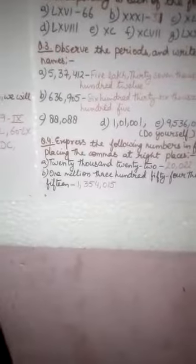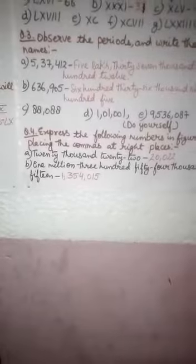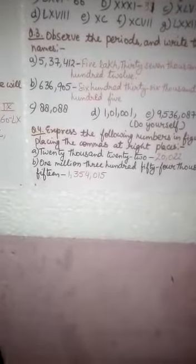In Indian system, Indian place value chart, there are 4 periods and each is divided into 2 parts but the ones period is divided into 3 parts. Ones, tens and hundreds.